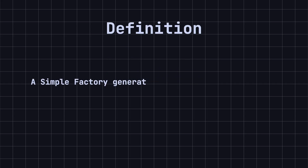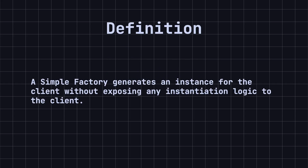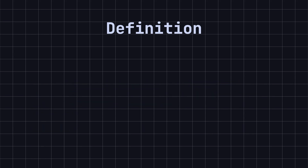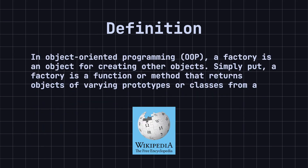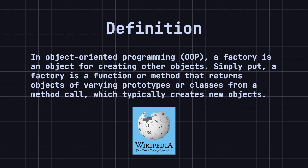Now, let's look at its definition. In simple terms, a simple factory generates an instance for the client without exposing any instantiation logic to the client. According to Wikipedia, in Object-Oriented Programming (OOP), a factory is an object for creating other objects. Simply put, a factory is a function or method that returns objects of varying prototypes or classes from a method call, which typically creates new objects.